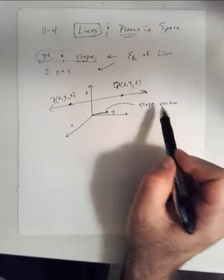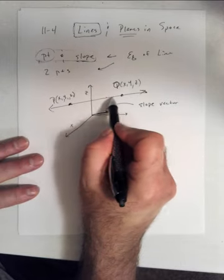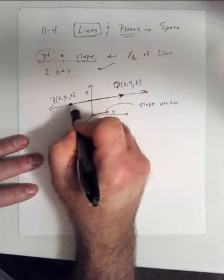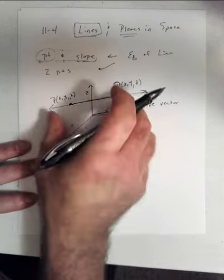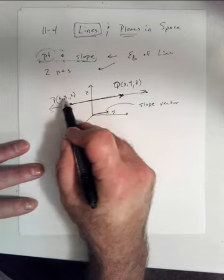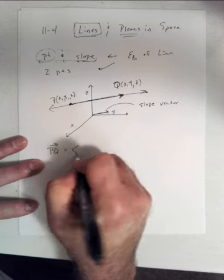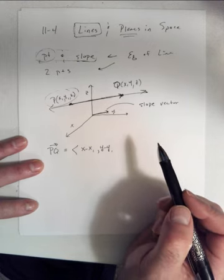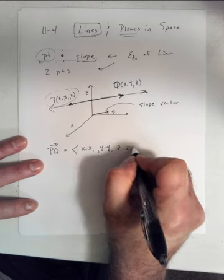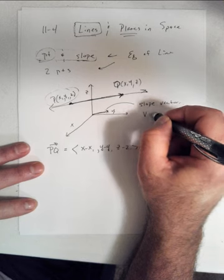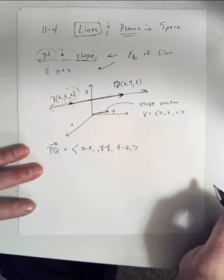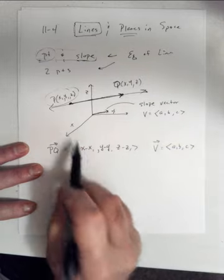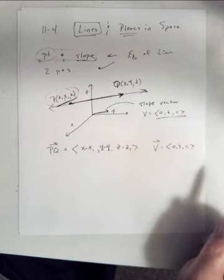This is point and slope. We take point Q somewhere on the line, grab that piece of the line, and translate it to the origin by subtracting. So the vector PQ becomes (X − X₁, Y − Y₁, Z − Z₁). My slope vector V has coordinates A, B, and C. You will be given point P and slope vector V.